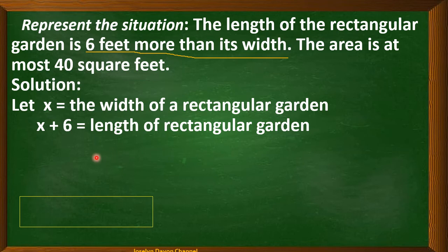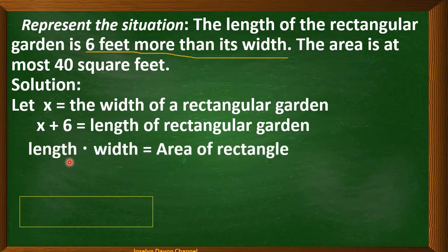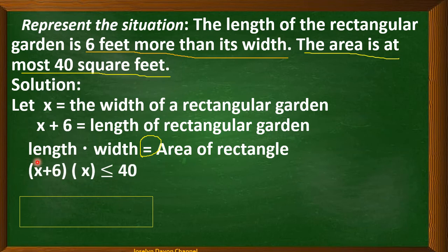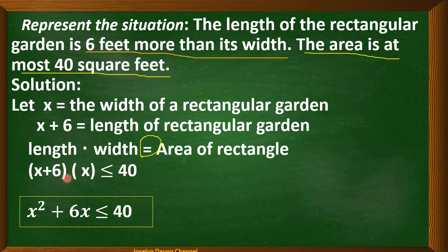Recall that the formula for finding the area of a rectangle is length times width. The area is at most 40 square feet, so instead of an equal sign, we use an inequality symbol. Substituting: (x + 6) × x ≤ 40. Simplifying: x² + 6x ≤ 40.